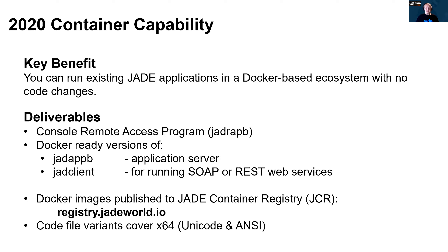In 2020, Docker images can be used to configure and deploy a fully containerized Jade environment. These are served from the Jade Container Registry, or JCR for short, accessible at the URL registry.jadeworld.io. Each container image is configured to run a single Jade process. The code variants provided in our initial release cover Unicode, ANSI, and x64 variants. We are not providing 32-bit images in this release, and we probably won't until there is client demand.